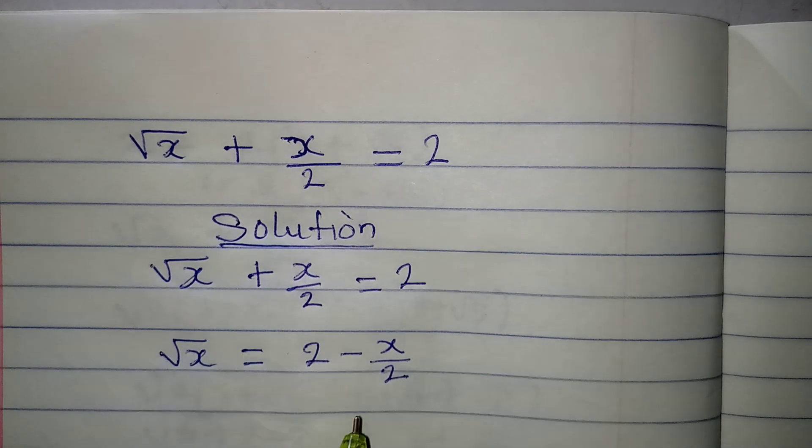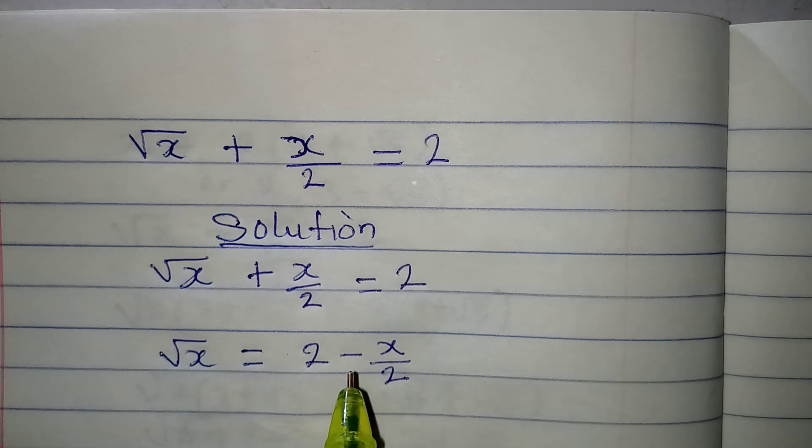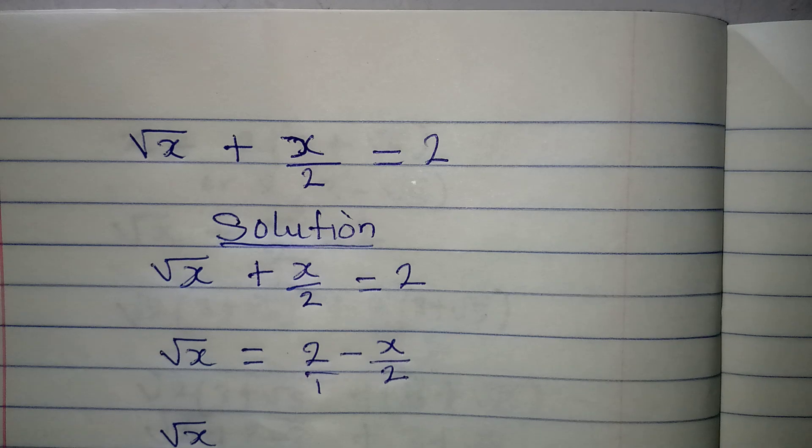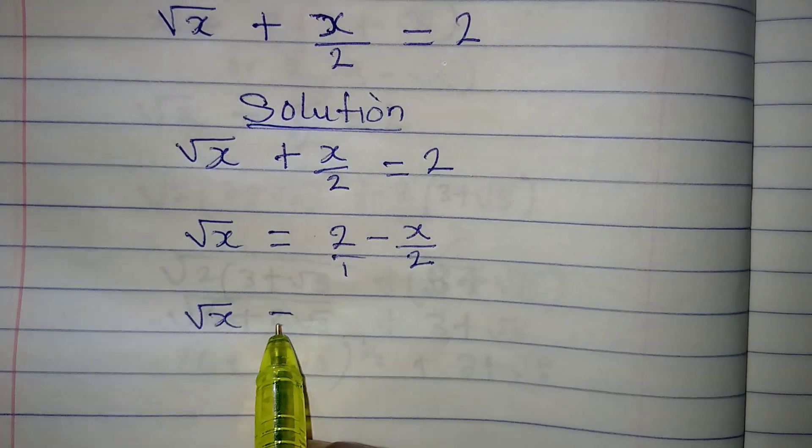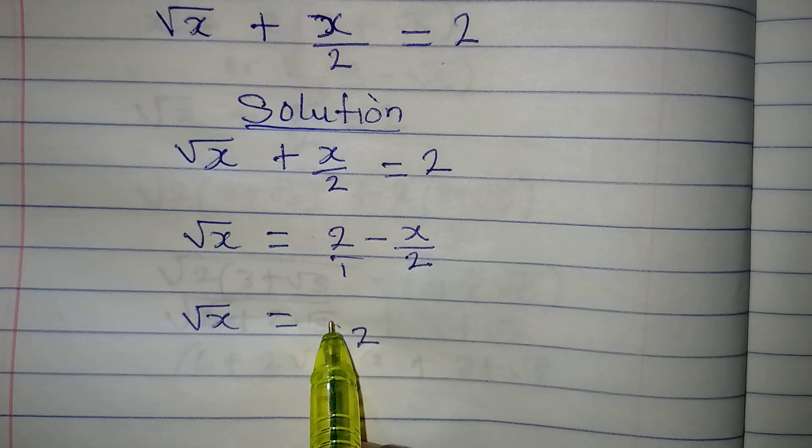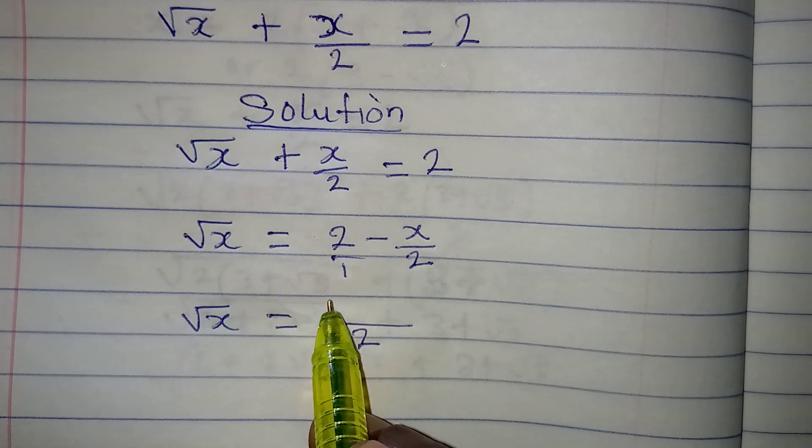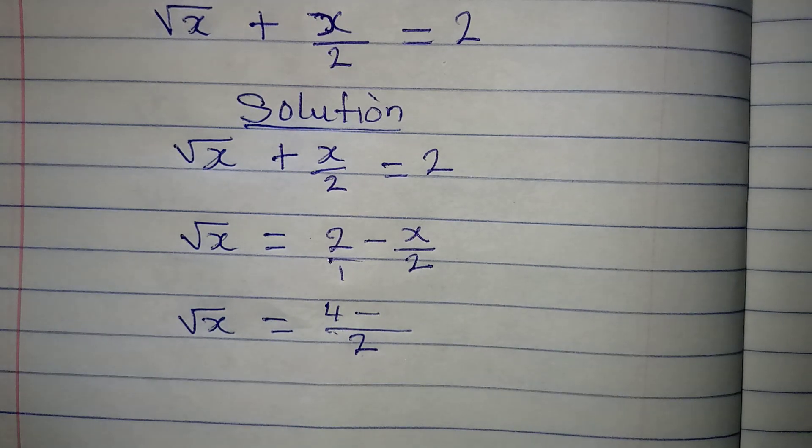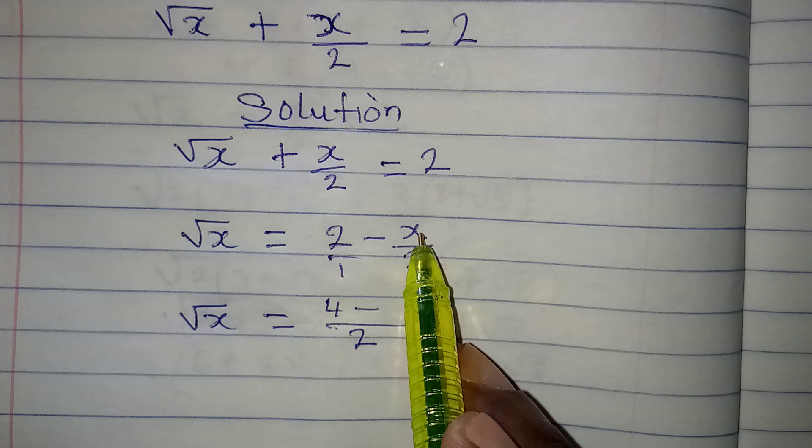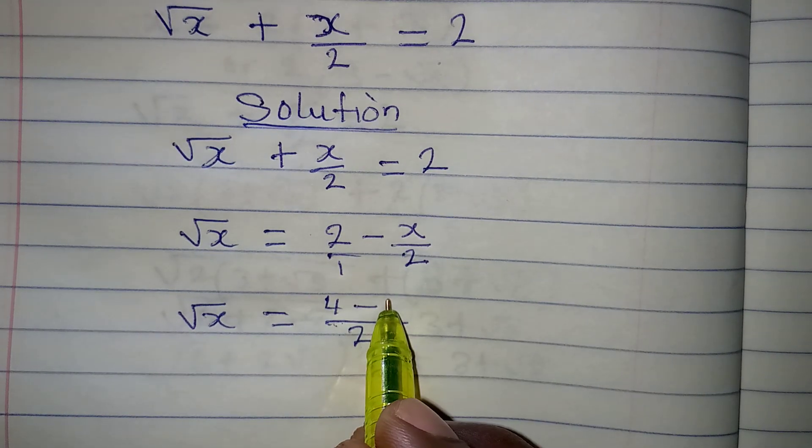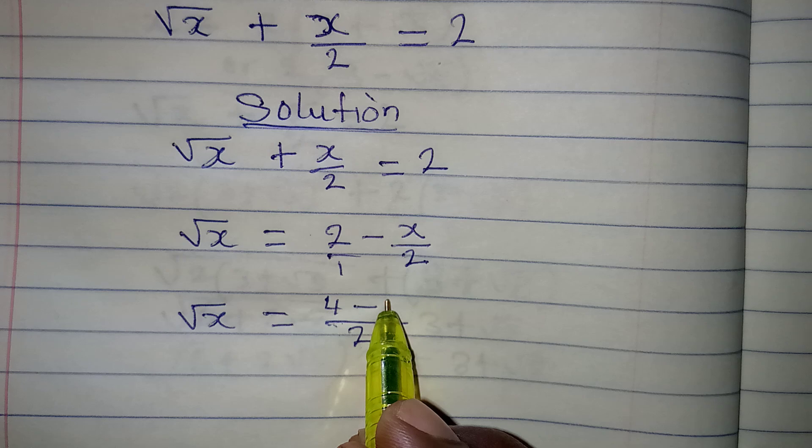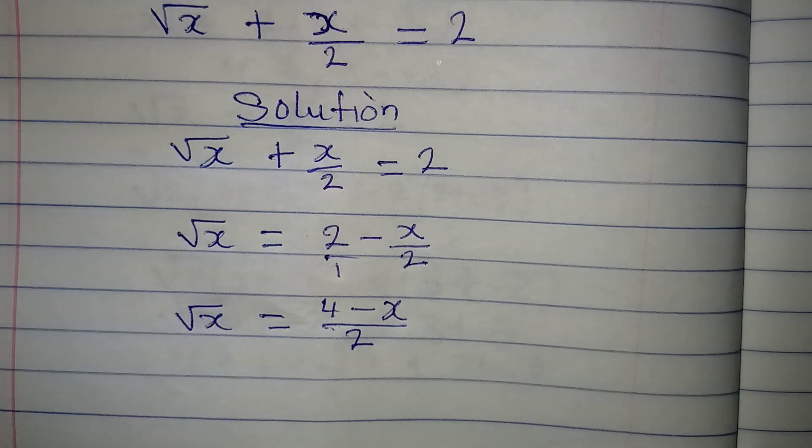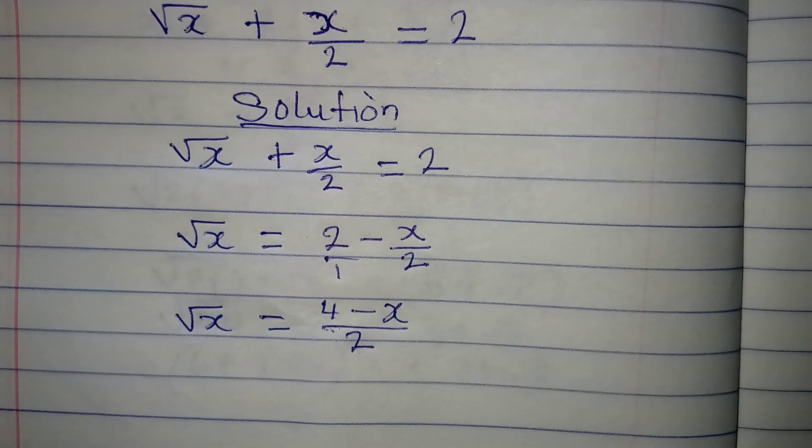So what if we find the LCM of the right hand side. Remember this is over 1. So that means square root of x will be equal to the LCM is 2. 2 divided by 1 is 2 times 2, we have 4 minus 2 divided by 2 is 1 times x, we are going to have x. So this is what we have.